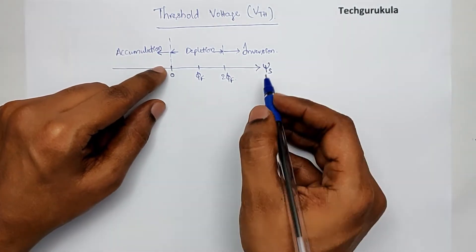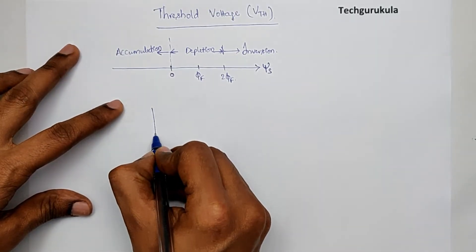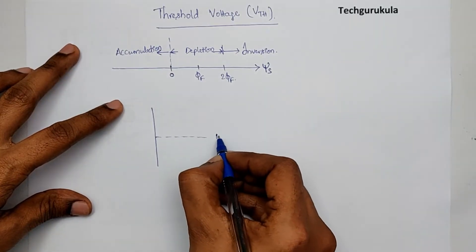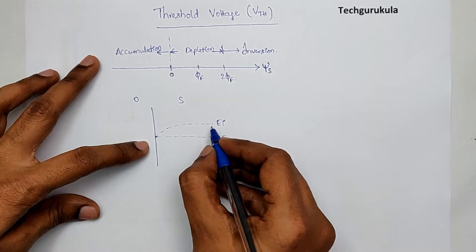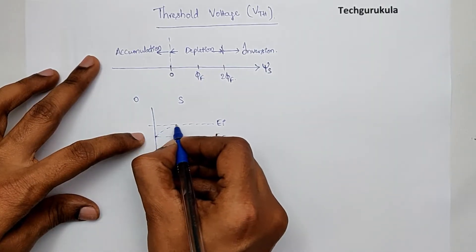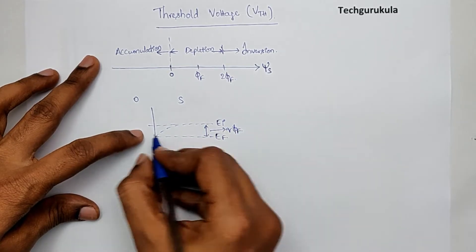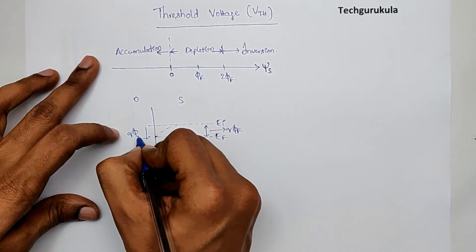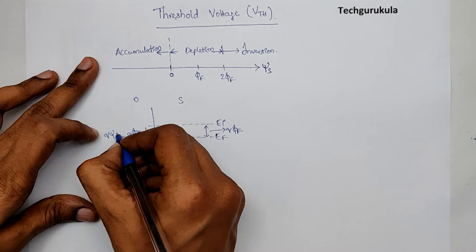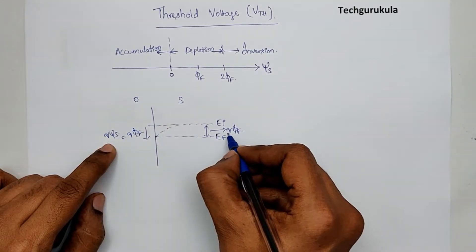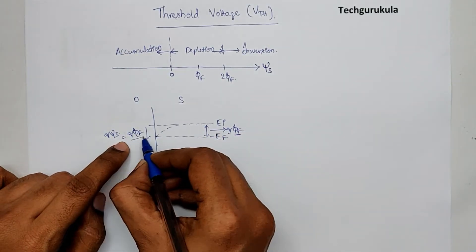When we observe the energy band diagram — let me draw it here — when this is E_f, this is the oxide, and this is the semiconductor, the E_i band bending has been exactly equal to phi_f, and this band bending will be q*phi_f. This is q times psi_s. This is the bulk potential, and the band bending of E_f has been equal to q times phi_f.